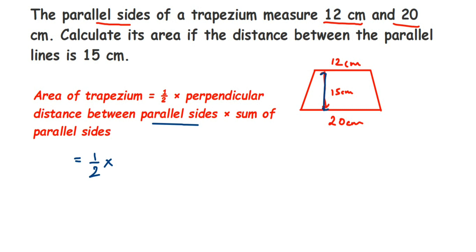...multiplied by the sum of the parallel sides. We have to add 12 plus 20. So, half times 15 times (12 plus 20). 12 plus 20 is 32.